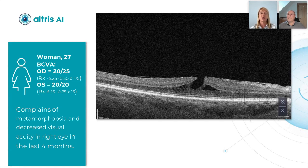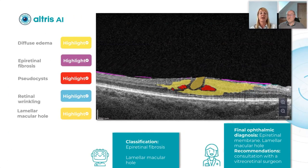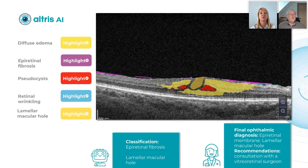Here you can see her OCT, and it was analyzed by AI. Look what was found — such biomarkers as diffuse edema, epiretinal fibrosis, cytocysts, retinal wrinkling, and lamellar macular hole were detected as biomarkers.